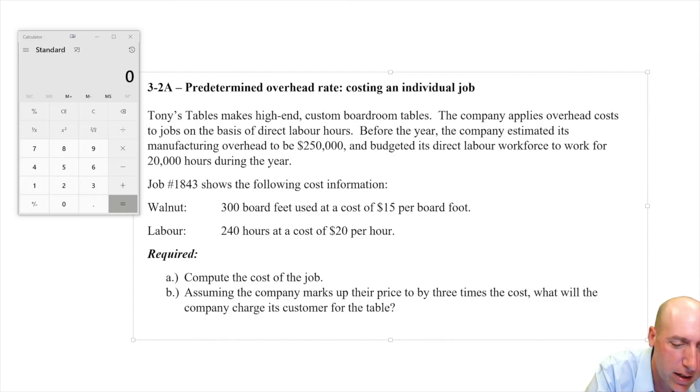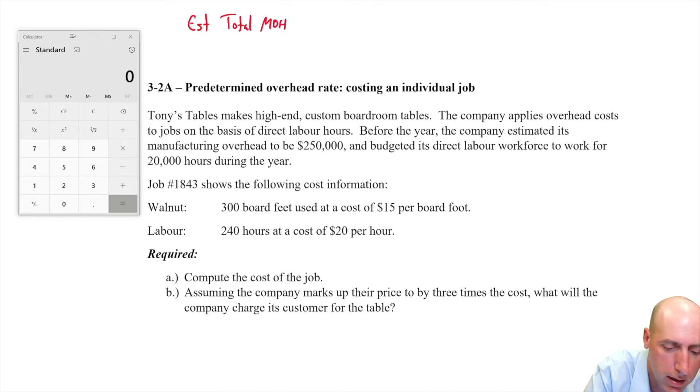Here's how we calculate the predetermined overhead rate. We take estimated total overhead divided by our estimated overhead driver, whatever that driver should be, and we determine some sort of rate here. And that's what this question is driving at. We're coming up with an overhead rate to cost a job. We're going to need our calculator.